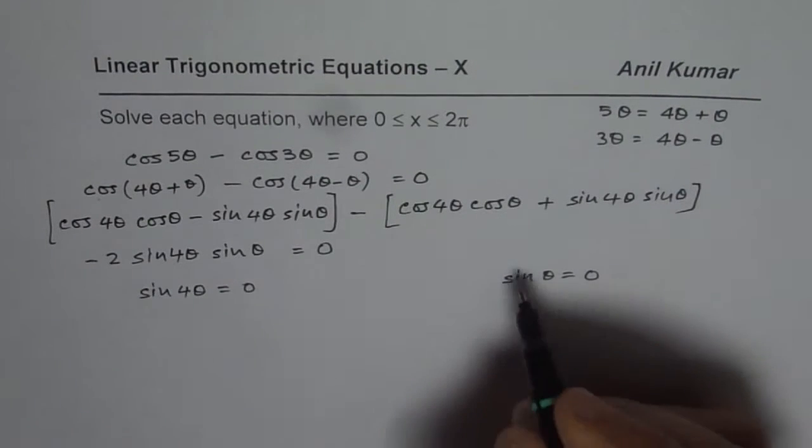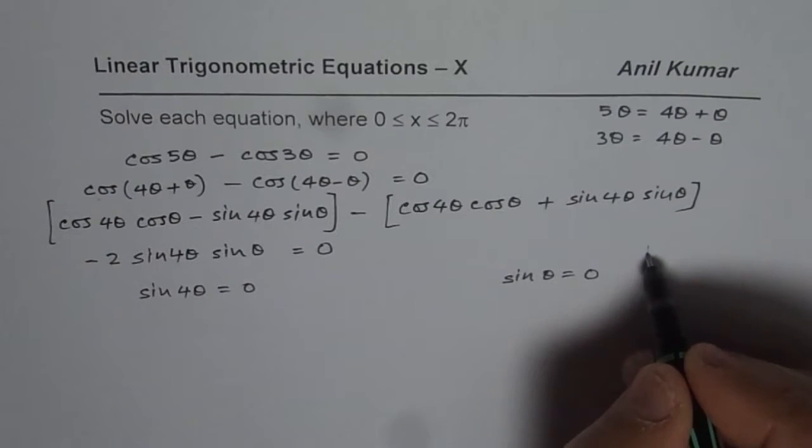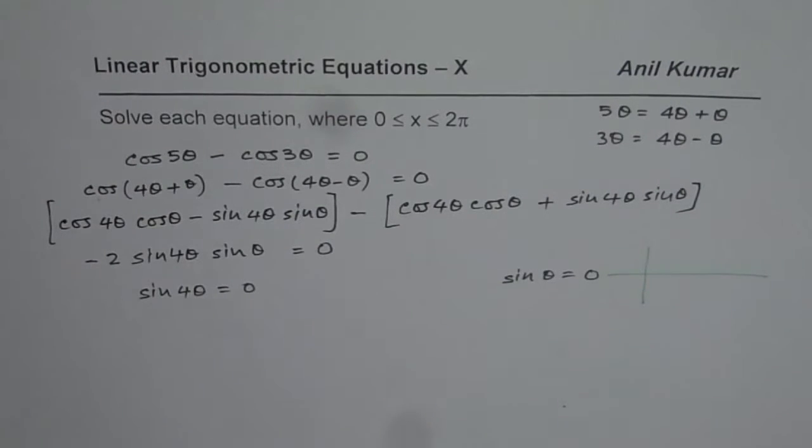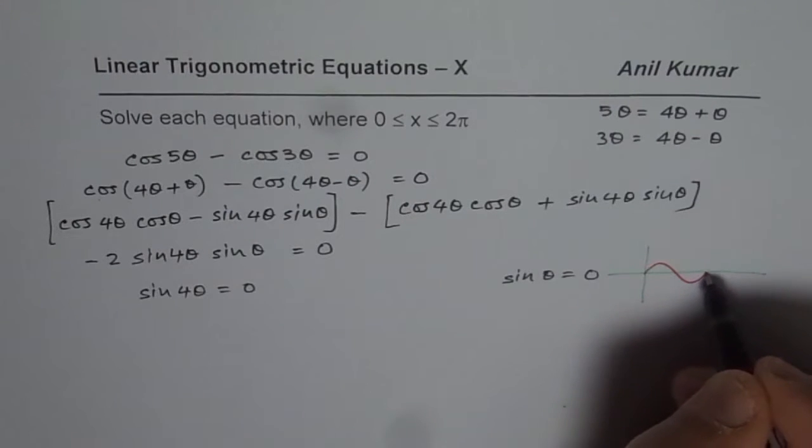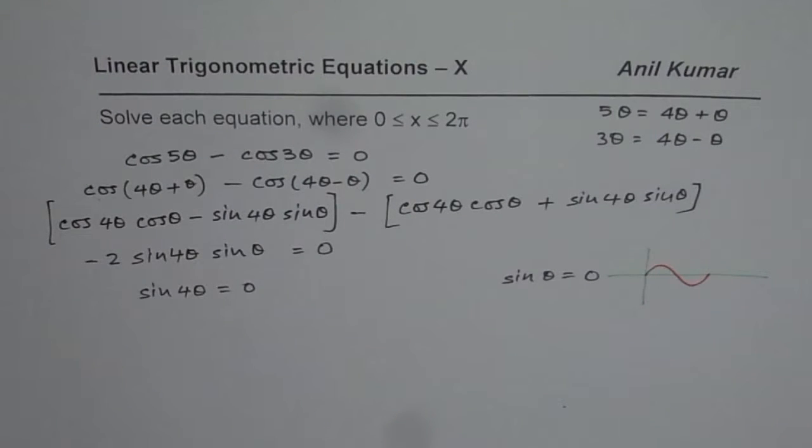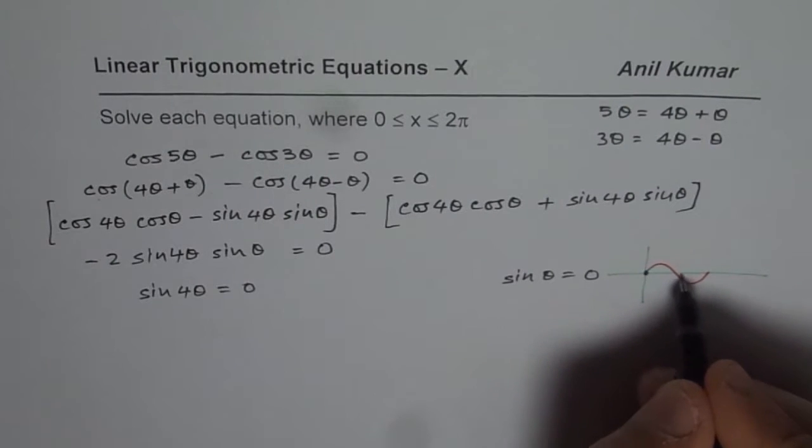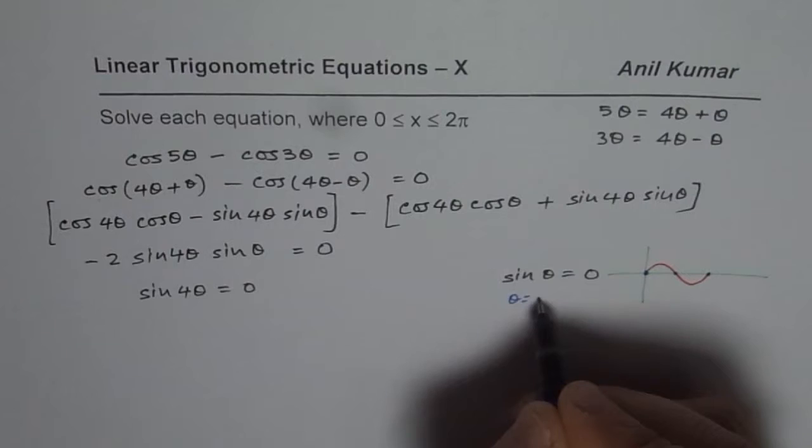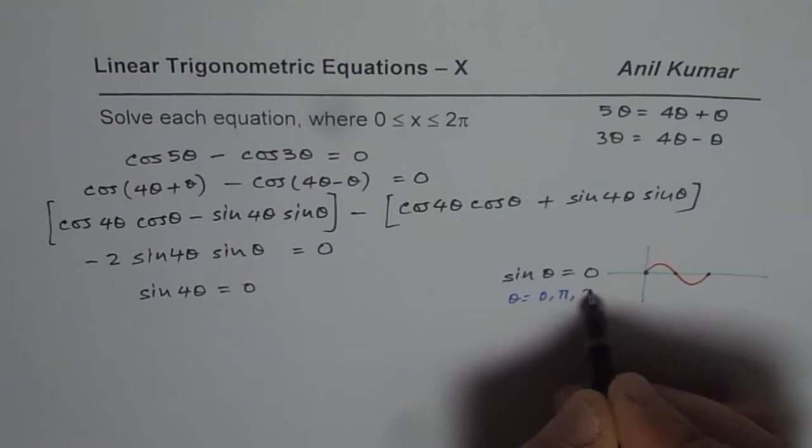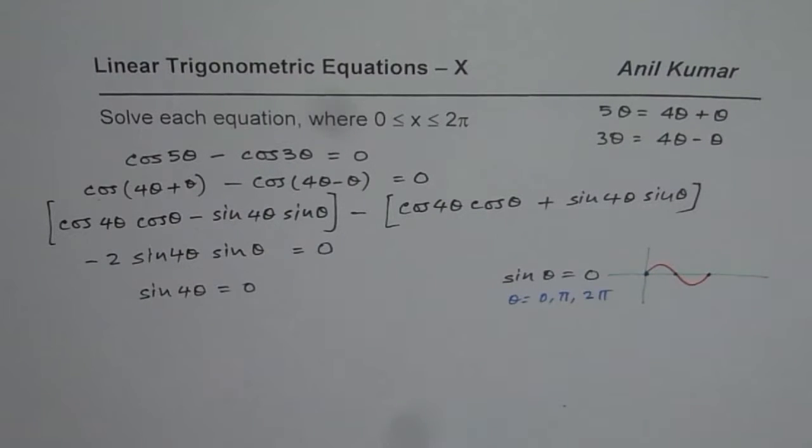If you're looking for sin θ equals 0, it's good to sketch the sin graph as I've done in most videos. Within 0 to 2π there are three points where this curve is 0. So we get θ equals 0, π, and 2π. That's one set of solutions.